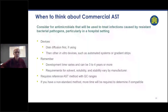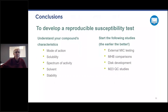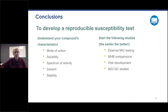Requirements for solubility and stability of your compound vary by manufacturer. It will require that you have a reference AST method with QC ranges. If you have a non-standard method, more time will be required to determine if your compound is compatible with the system. In conclusion, to develop a reproducible susceptibility test you need to understand your compound's characteristics — solubility, spectrum of activity, solvent, and stability. It's important to start external MIC testing, MHB comparisons, disc development, and M23 QC studies — earlier is always better.